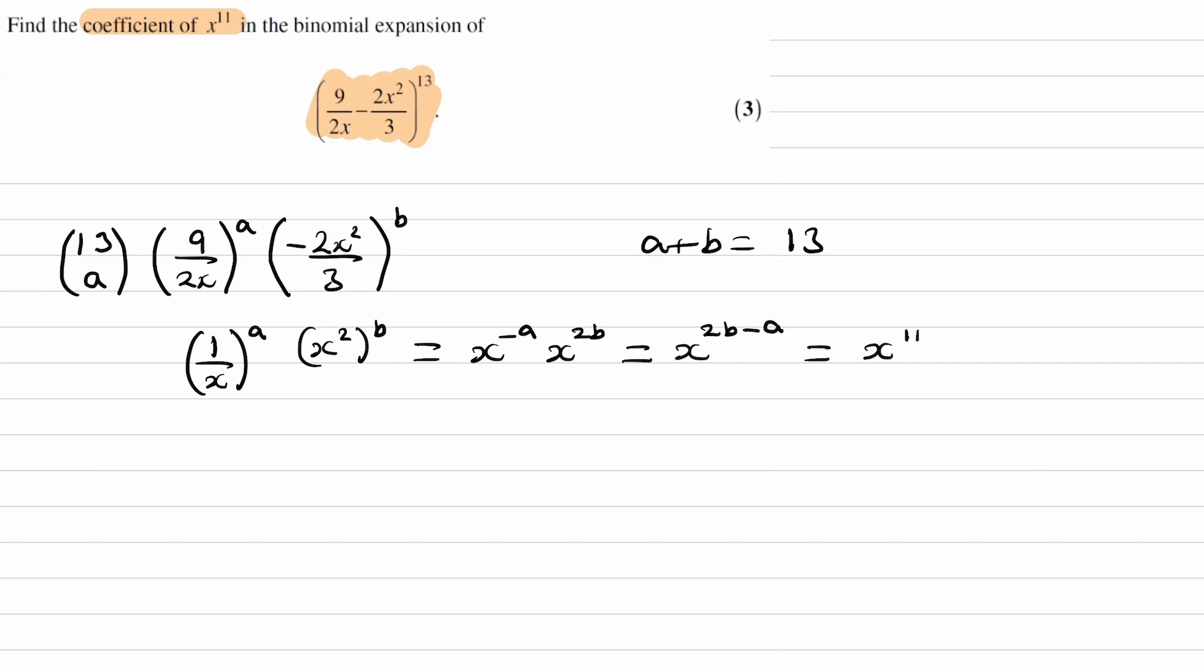So this should be equal to x to the power of 11. And that gives us a condition for b and a, or rather, it gives us an equation involving b and a. 2b minus a is equal to 11.